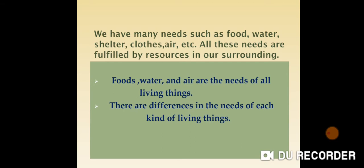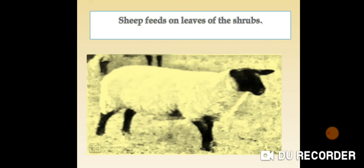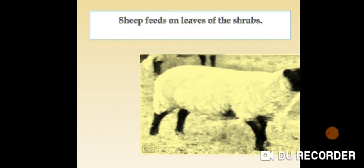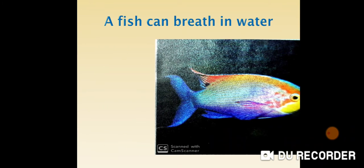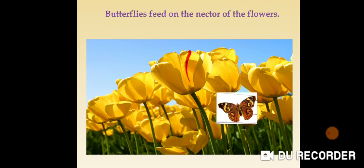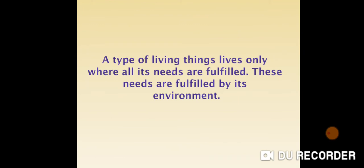There are differences in the needs of each kind of living thing. For example, a sheep feeds on the leaves of shrubs. A fish can breathe in water. A butterfly feeds on the nectar of flowers. A type of living thing lives only where all its needs are fulfilled, and these needs are fulfilled by its environment.